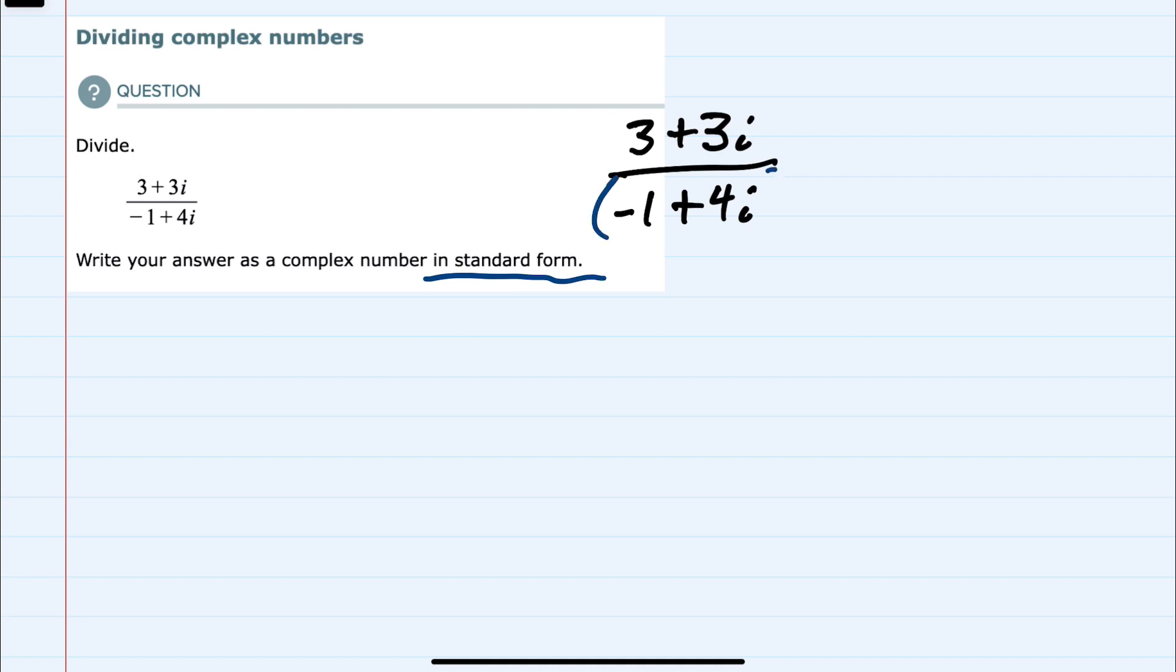We want to multiply the denominator by its conjugate. And the conjugate will just be the first number, but with the opposite sign in the middle, and then the second number. So here our conjugate will be negative 1, and instead of plus 4i, we would have minus 4i.